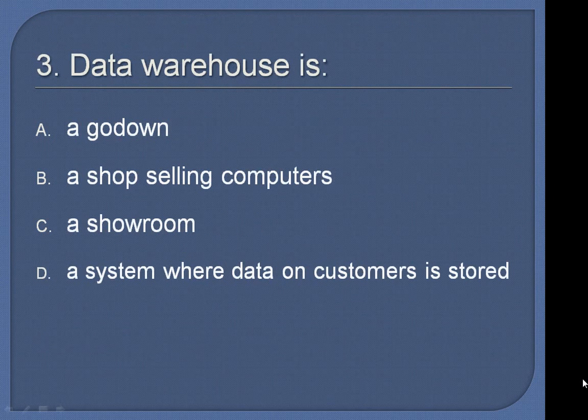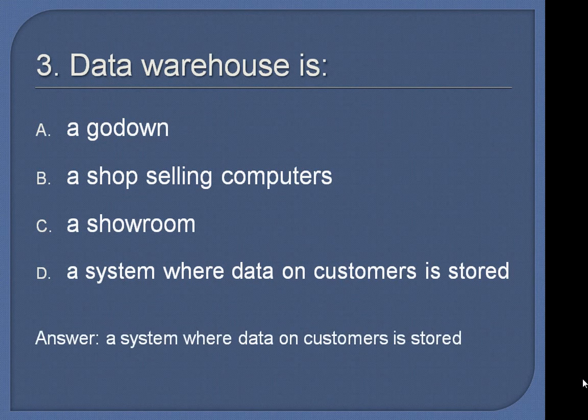Question 3: Data warehouse is: A go-down, a shop selling computers, a showroom, or a system where data on customers is stored? Answer: a system where data on customers is stored.